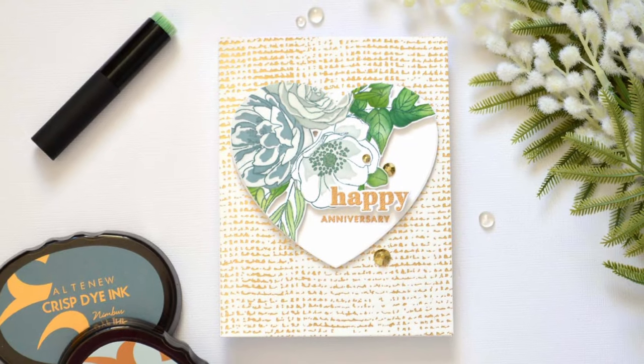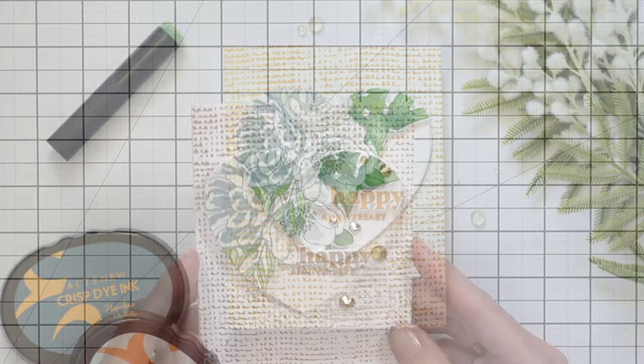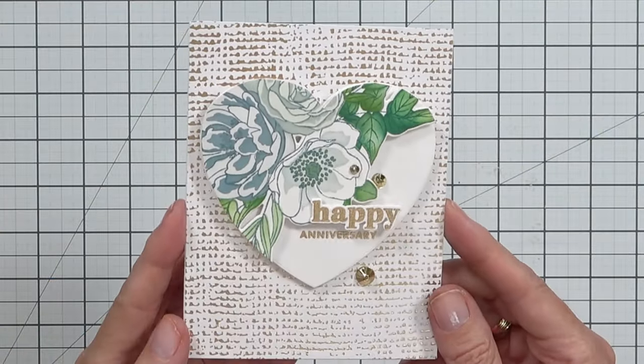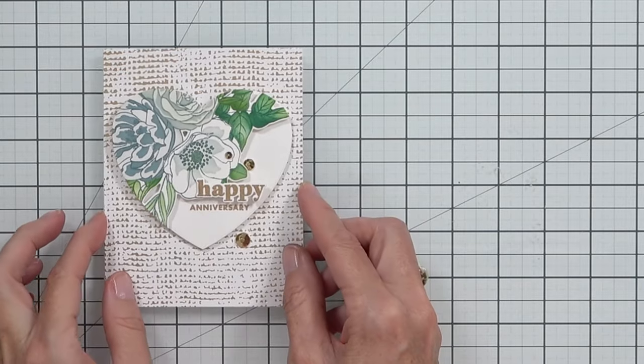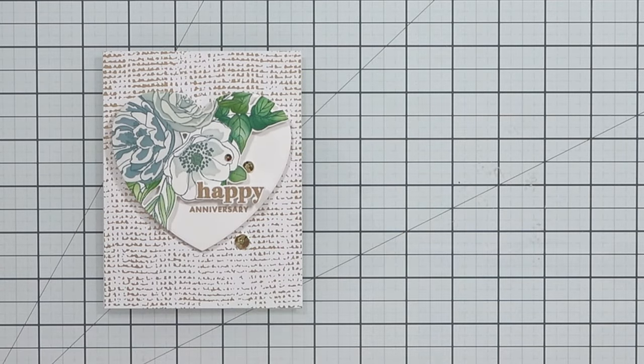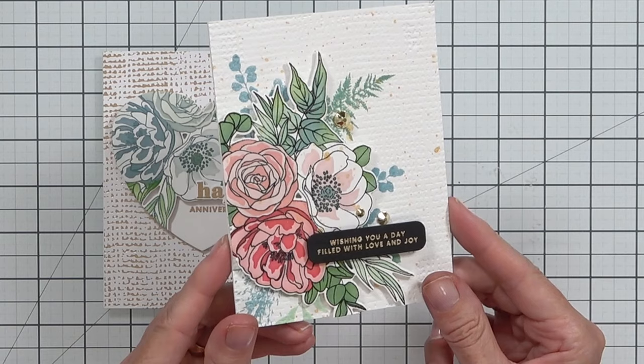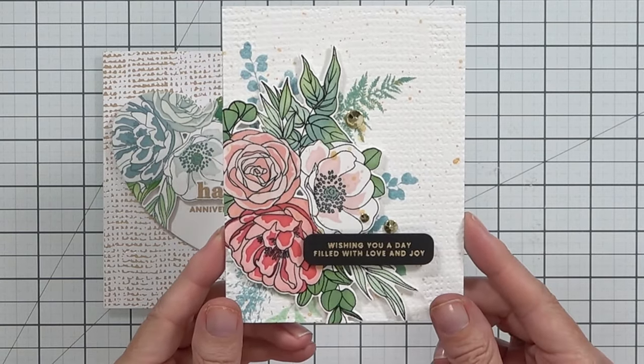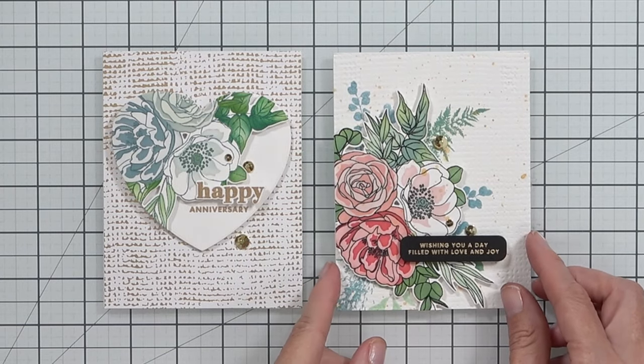And let's see both techniques. Here is the press plate used as a hot foil background and the blind letterpress look, which gives a much more subtle background effect. It's really pretty. So let me know in the description below which one's your favorite today and if you're going to give this technique a try.